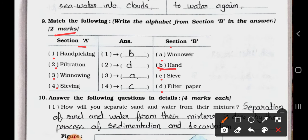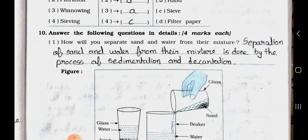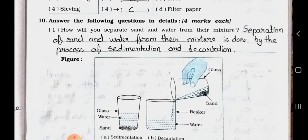Match with C: Sieve. Now see main 10: Answer the following questions in details. It carries 4 marks each. Each question carries 4 marks.